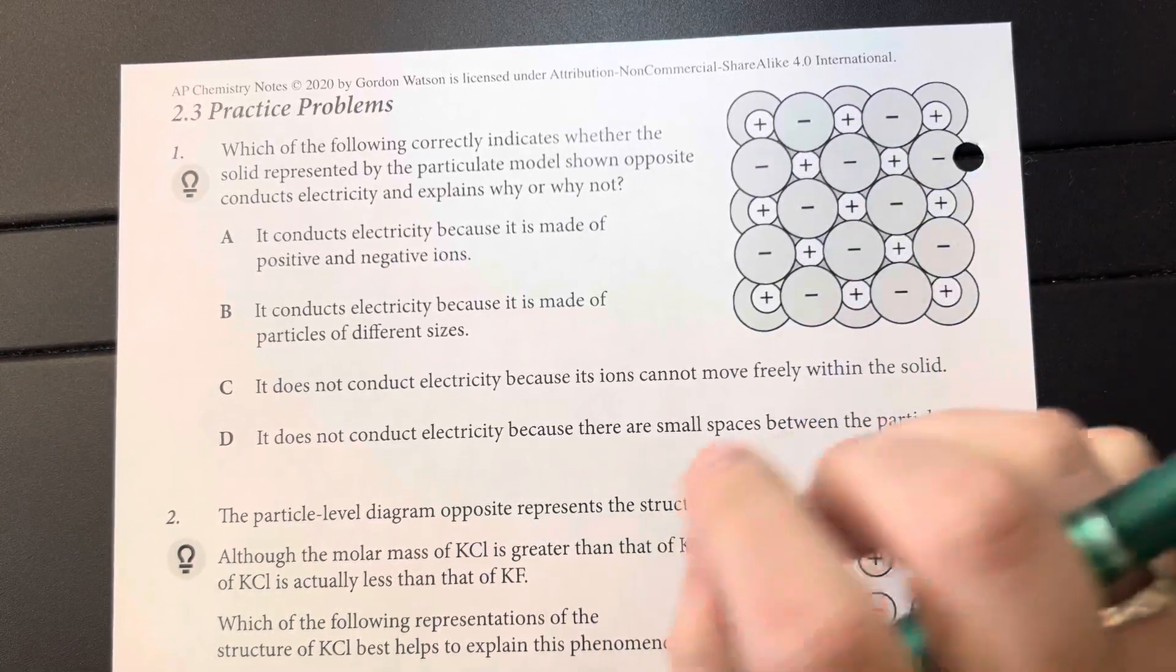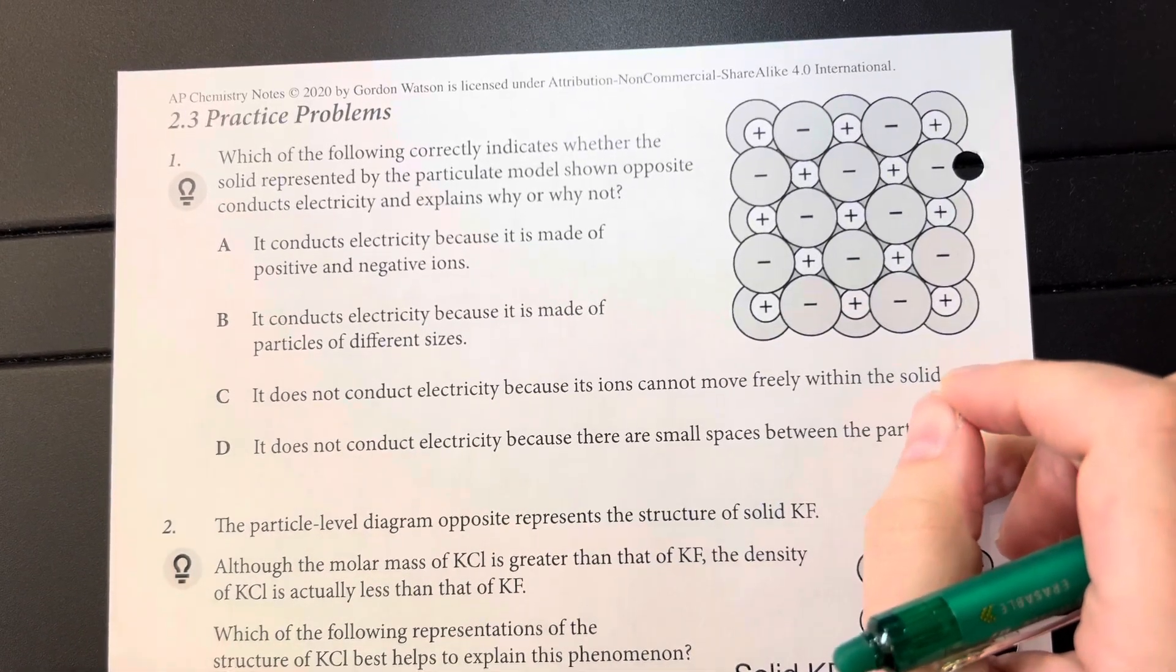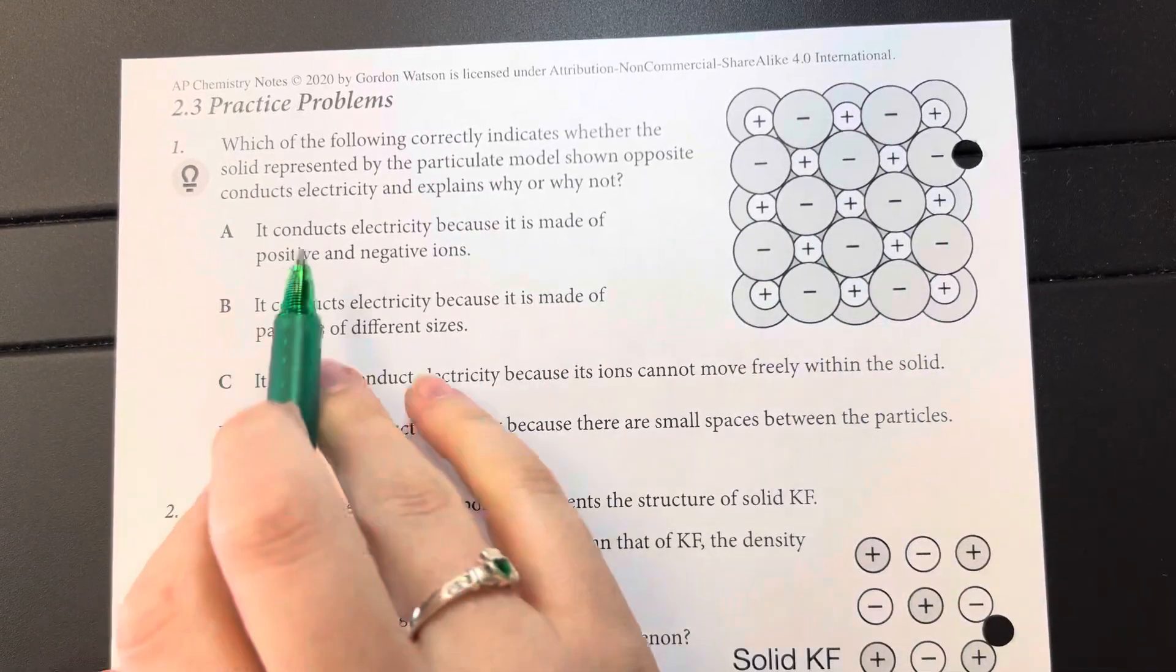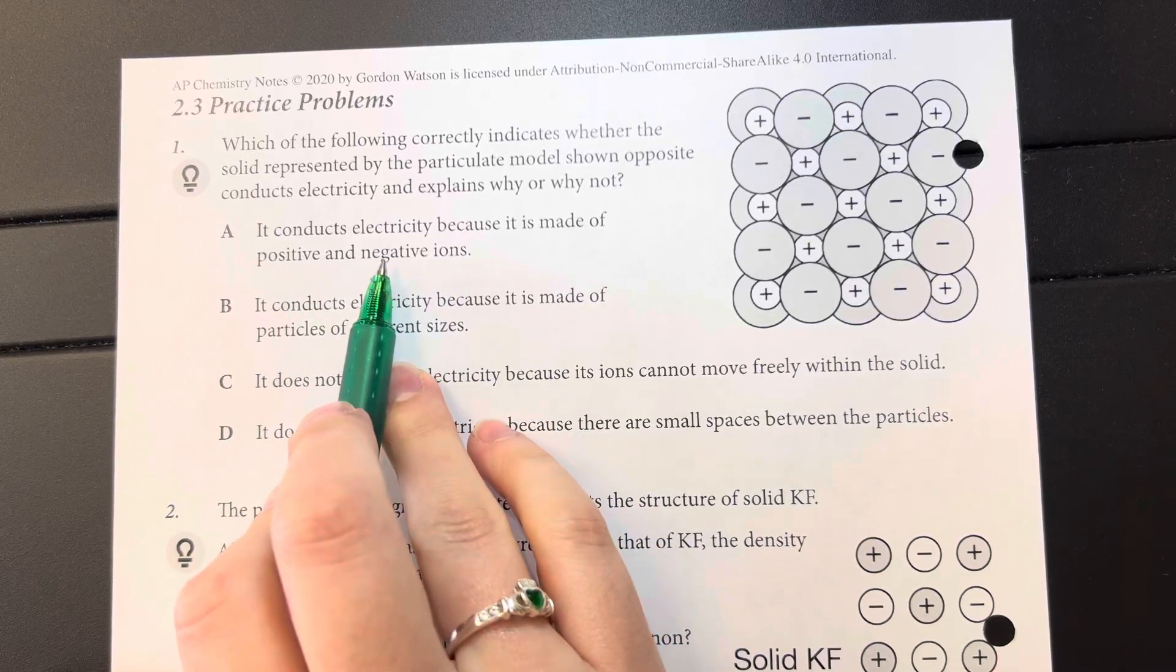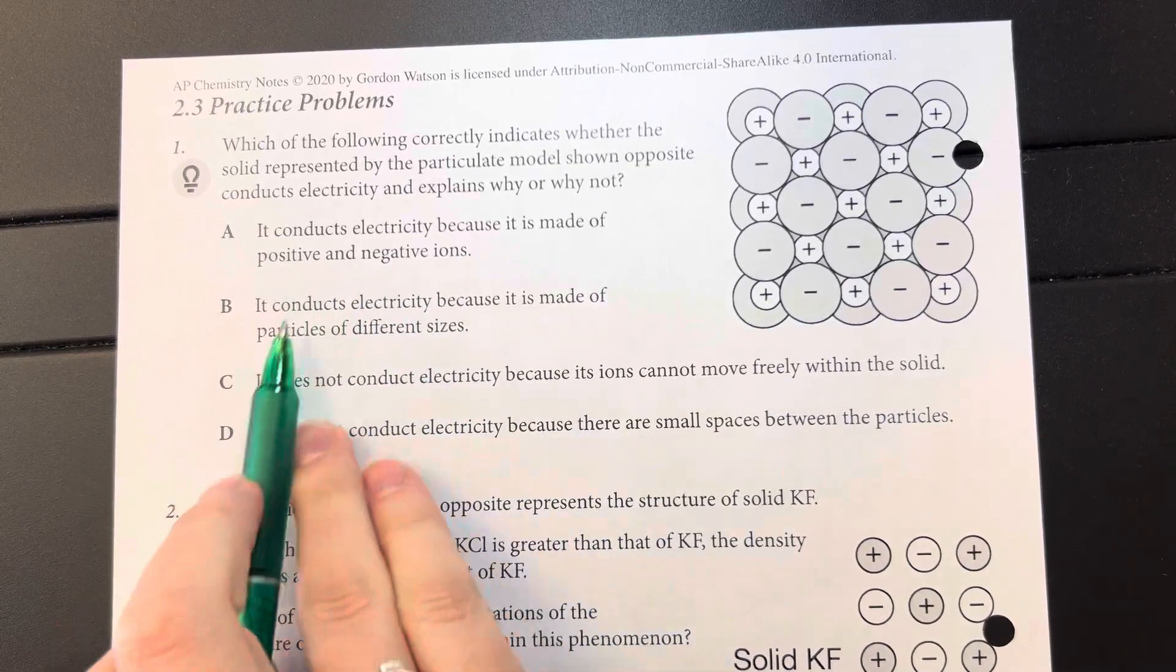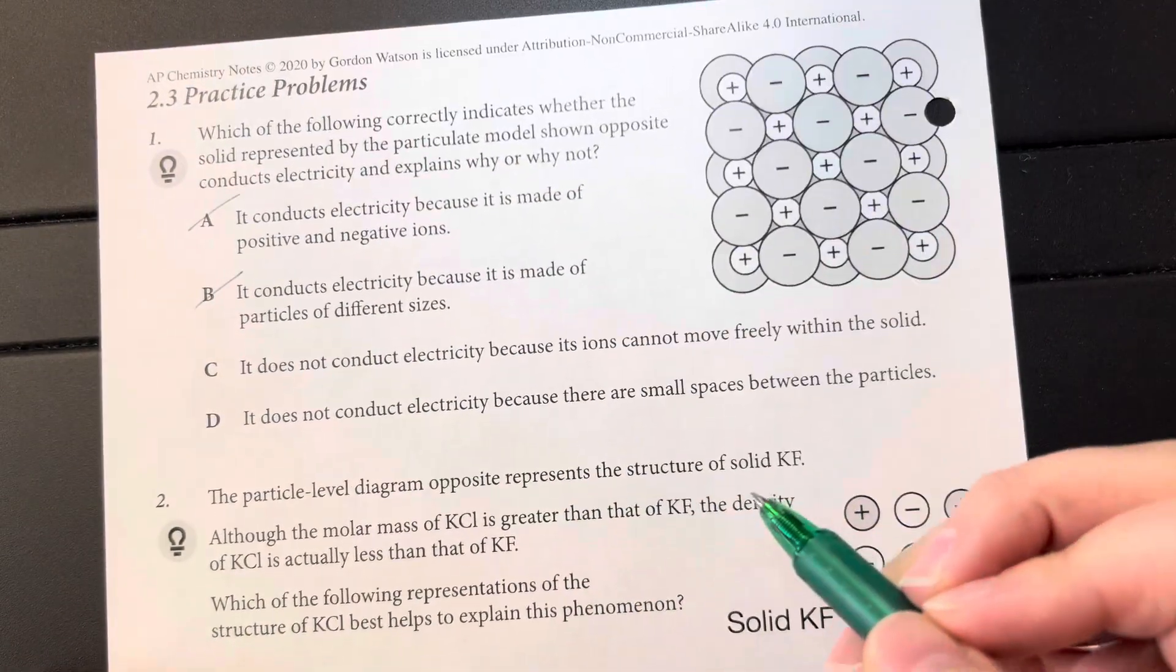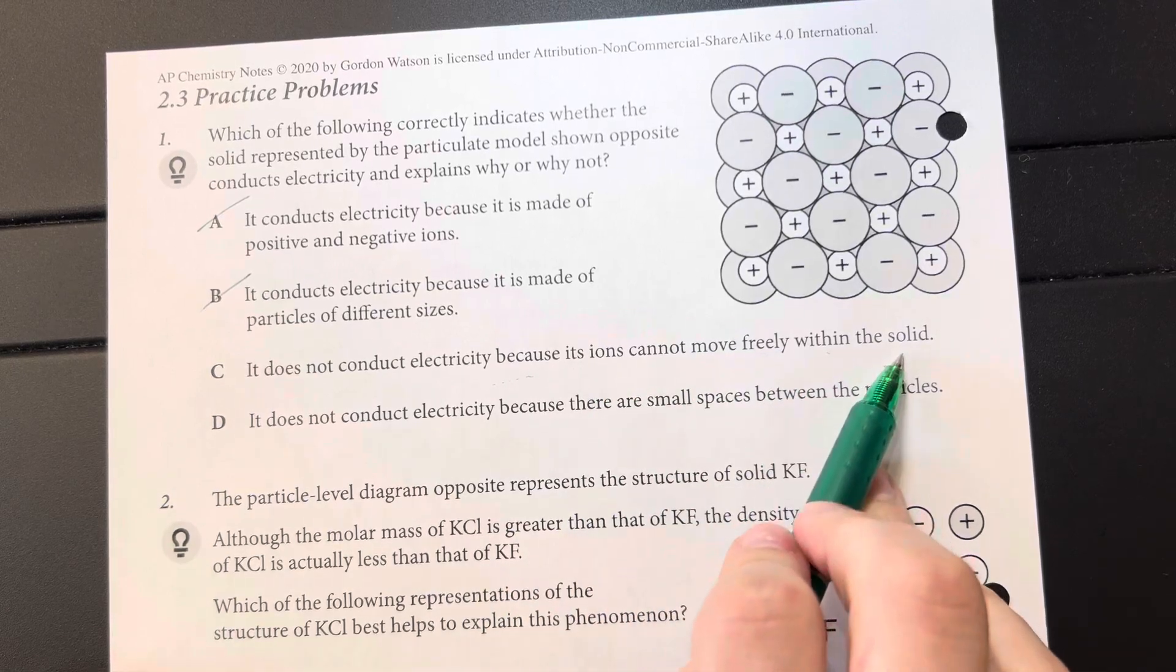Conducting electricity requires that there be space for movement along with difference of charges. Conducting electricity because it's made of positive and negative ions isn't good enough because they are different sizes. It doesn't do anything for me.